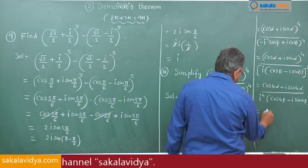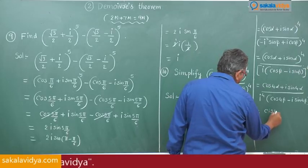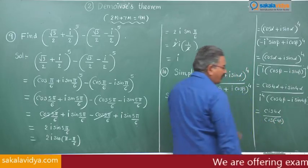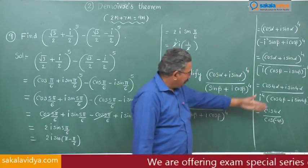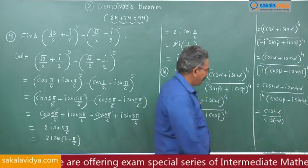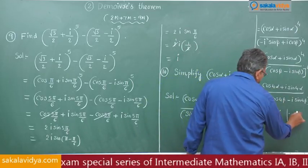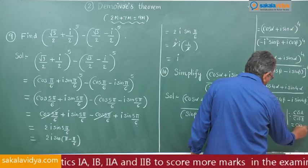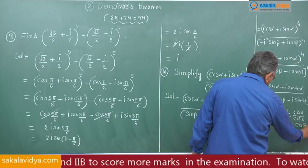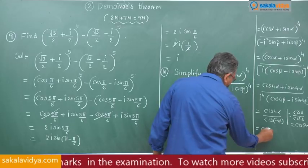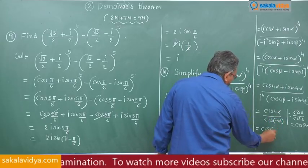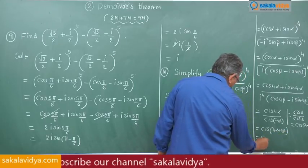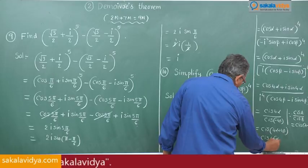We can write this as cis(4α) divided by cis(−4β). From the previous episode, cis(a) / cis(b) = cis(a − b). So we get cis(4α − (−4β)) = cis(4α + 4β) = cis 4(α + β). This is the final simplified form.